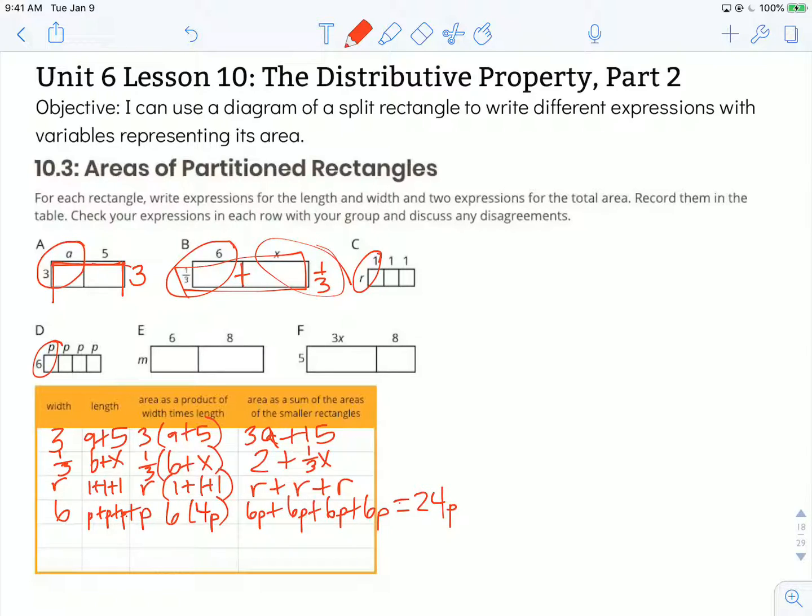This again is a beautiful way to consider the distributive property and how it works by using diagrams of split rectangles to write different expressions of that area, where we can see one expression and then the next one is just a distribution of that variable over each of the parts. And that's all we've done is use that distributive property to come up with each of these parts. 3 times A plus 3 times 5, which is 15.